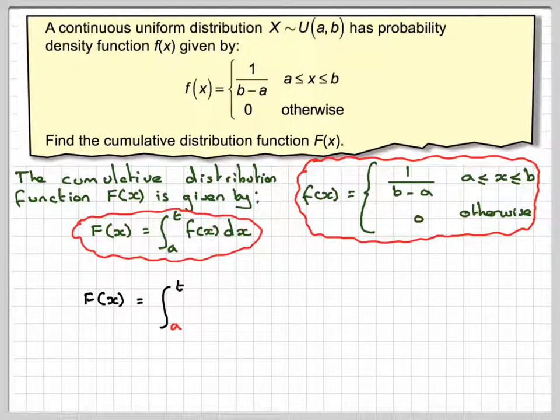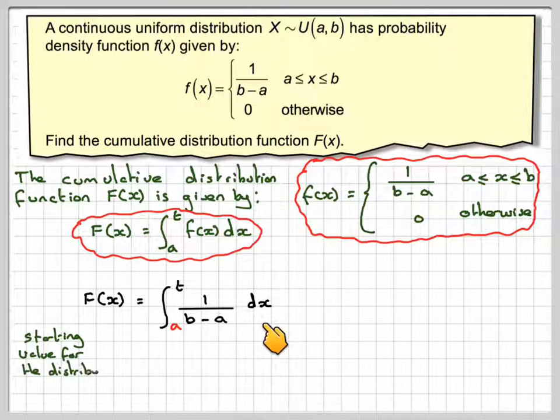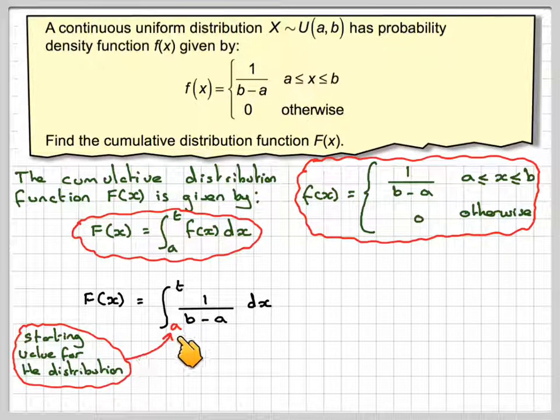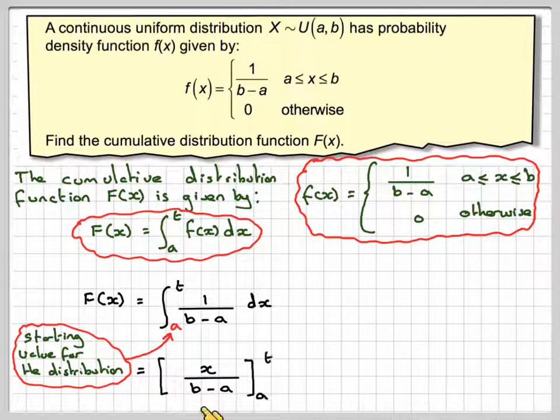So integrating, we're going to get from a to t, 1 over b minus a dx. This a is the starting value for the distribution, i.e. this value here. If we integrate that, we're just going to get x over b minus a from a to t.